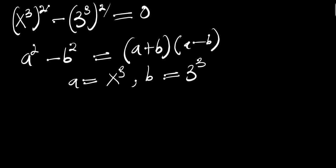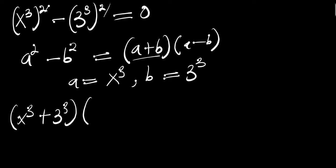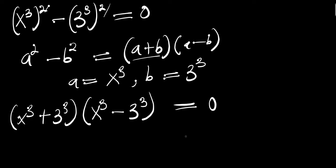So we are going to have, for (a + b) we will have x^3 + 3^3, times for (a - b) we will have x^3 - 3^3, and this equals 0.